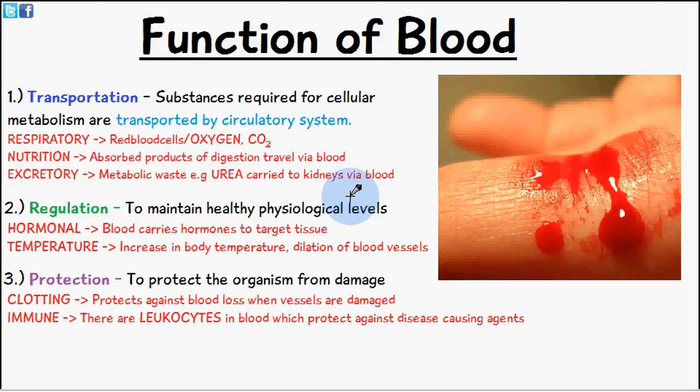On the contrary, we have the excretory system, where metabolic waste produced by cells — for example urea, or in the case of respiration, carbon dioxide — is carried out of the body. In the case of urea, it is carried to the kidneys through the blood system.